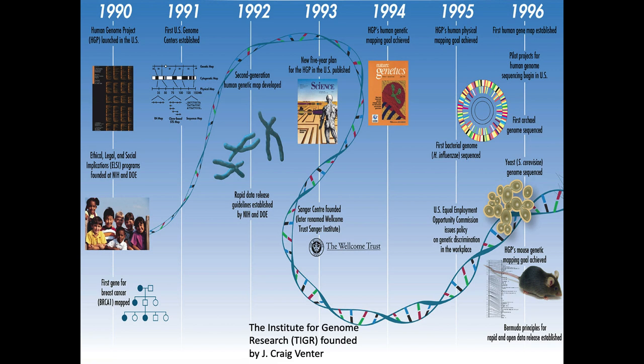As the nineties progressed, we got our first genetic map — mapping out genes and their locations on chromosomes. We achieved a physical map. Then in 1995 we had our first bacterial genome sequenced, in 1996 our first archaeal genome, and then yeast — the first yeast genome sequenced. That was a big deal, pushing us into tens of millions of base pairs.